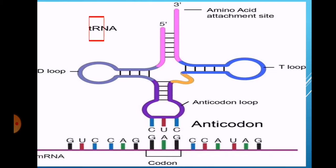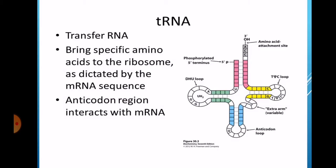Now, we have to learn the method of translation. We have to know about some organelles, nucleic acid and codons which are attached to the process of translation. So, tRNA or transfer RNA has a codon site, 3 prime and 5 prime site. The 3 prime site is called the amino acid attachment site. Transfer RNA brings specific amino acids to the ribosomes as dictated by the messenger RNA sequence. The anticodon region interacts with mRNA.